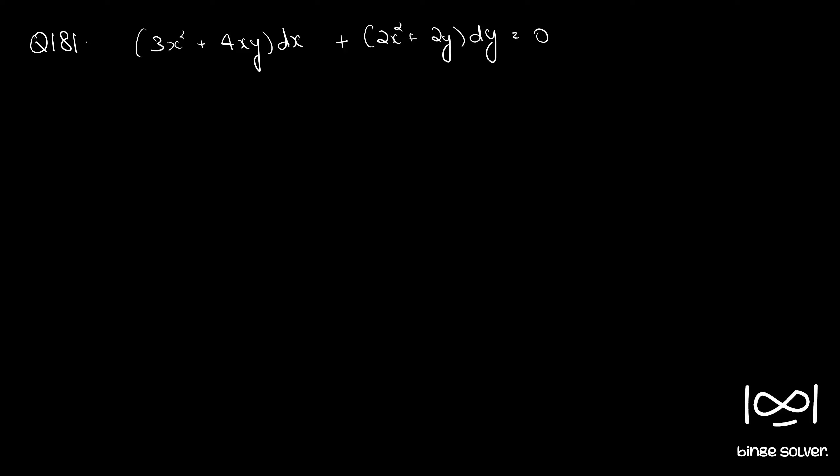Question number 181: 3x² + 4xy dx + 2x² + 2y dy = 0.